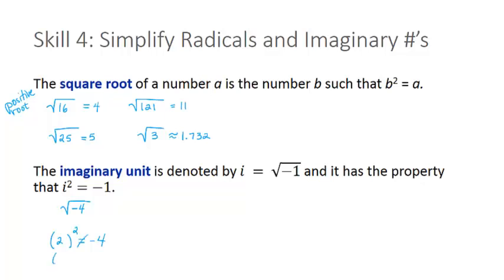If I square negative 2, I get positive 4. I don't get a negative number when I square a positive or negative value. So we have to introduce what's called the imaginary unit, denoted by the symbol i. It represents the square root of negative 1, and it has the property that i squared equals negative 1.